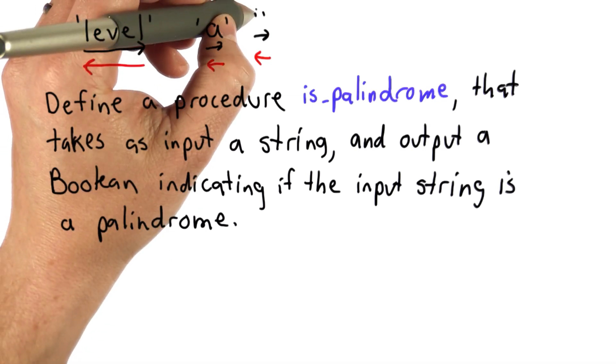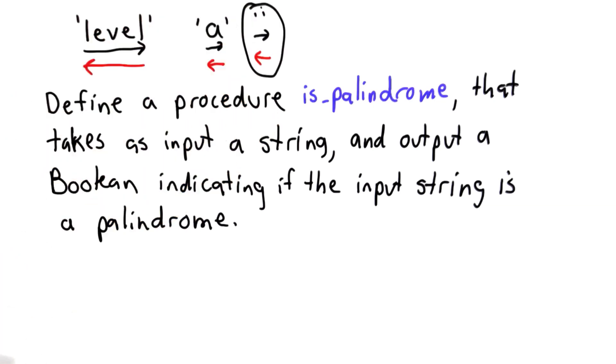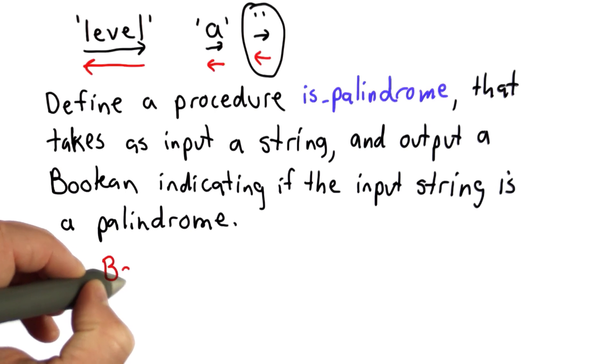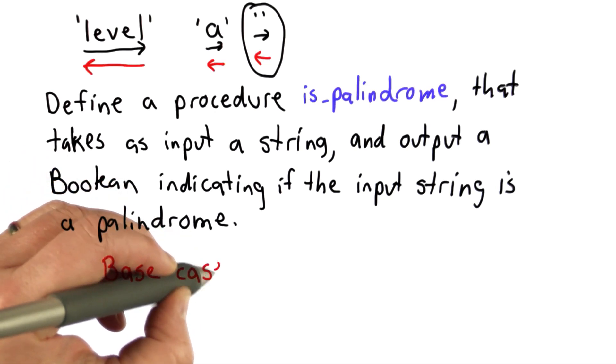So the first thing to notice is there's one simple case where we know right away whether a string is a palindrome. So we should think that that might be our base case. When we do procedures on numbers, our base case is often something that deals with a number like 0 or 1, a small number.